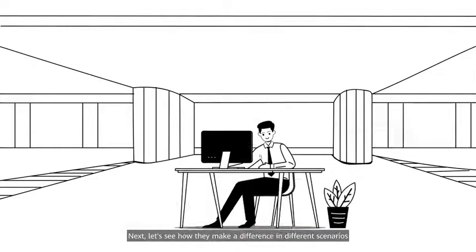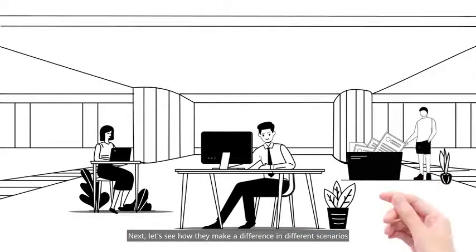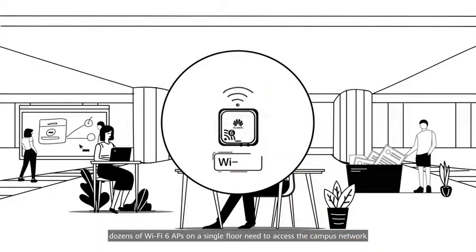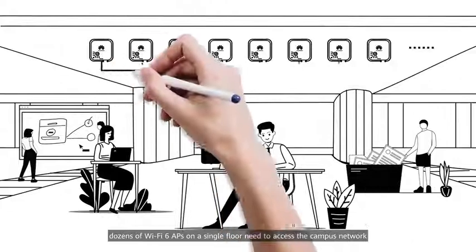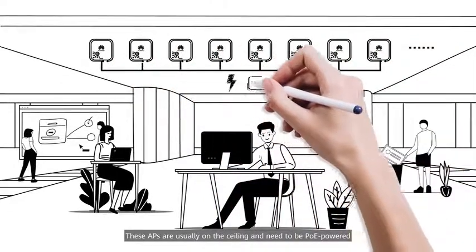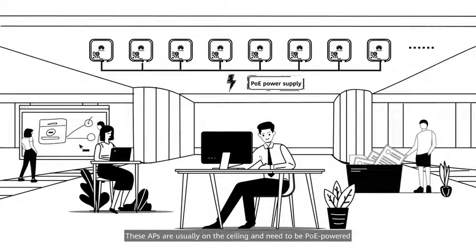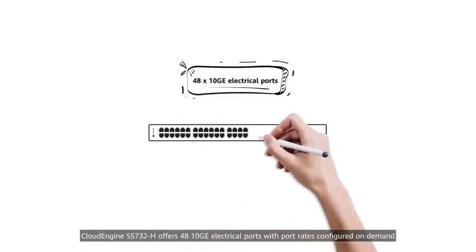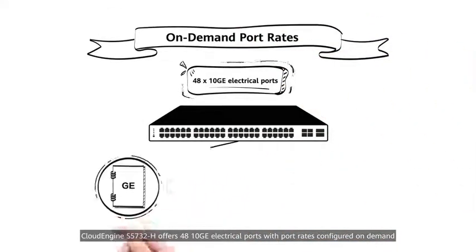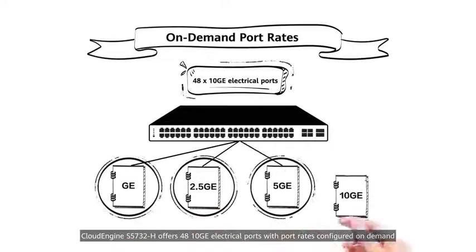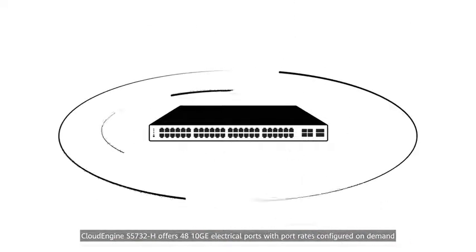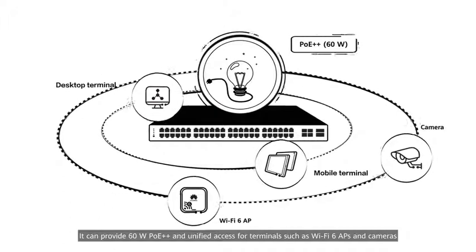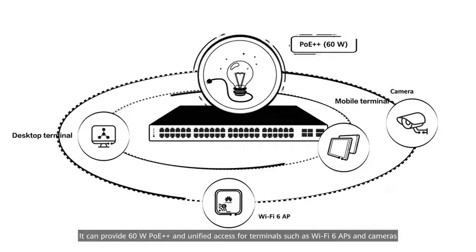Next, let's see how they make a difference in different scenarios. In a fully wireless office scenario, dozens of Wi-Fi 6 APs on a single floor need to access the campus network. These APs are usually on the ceiling and need to be PoE-powered. Cloud Engine S5732H offers 48 10GE electrical ports, with port rates configured on-demand. It can provide 60-watt PoE++ and unified access for terminals such as Wi-Fi 6 APs and cameras.